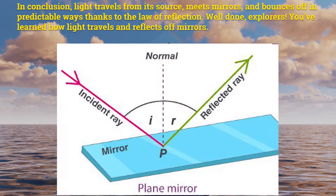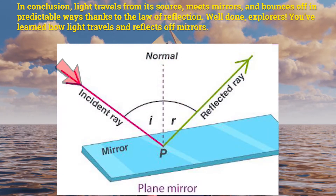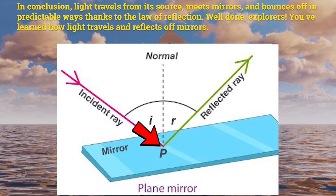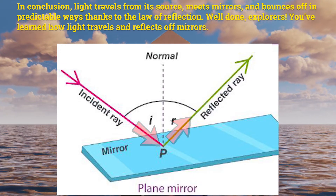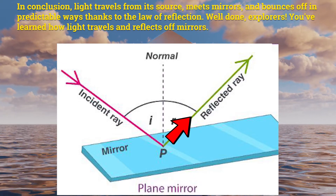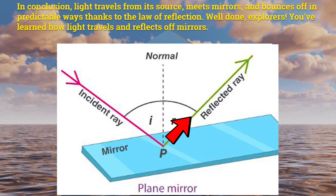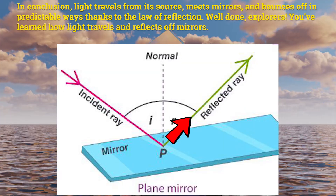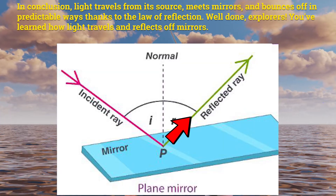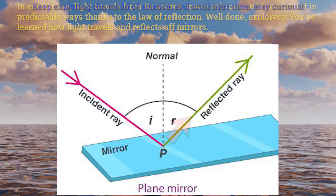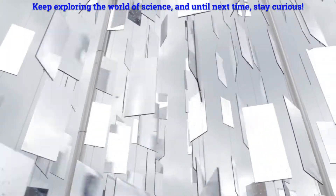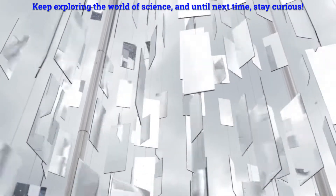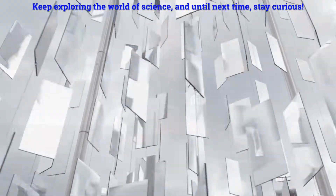In conclusion, light travels from its source, meets mirrors, and bounces off in predictable ways thanks to the law of reflection. Well done, explorers. You've learned how light travels and reflects off mirrors. Keep exploring the world of science, and until next time, stay curious.